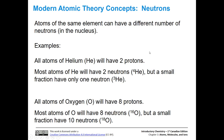Atoms of the same element can have a different number of neutrons in the nucleus. They must have the same number of protons, but the neutron count can vary. All helium atoms have two protons. Most have two neutrons, giving a mass number of four. A small fraction have only one neutron, giving a mass number of three. All oxygen atoms have eight protons. Most have eight neutrons — that's oxygen-16 — but a small fraction have 10, making oxygen-18.